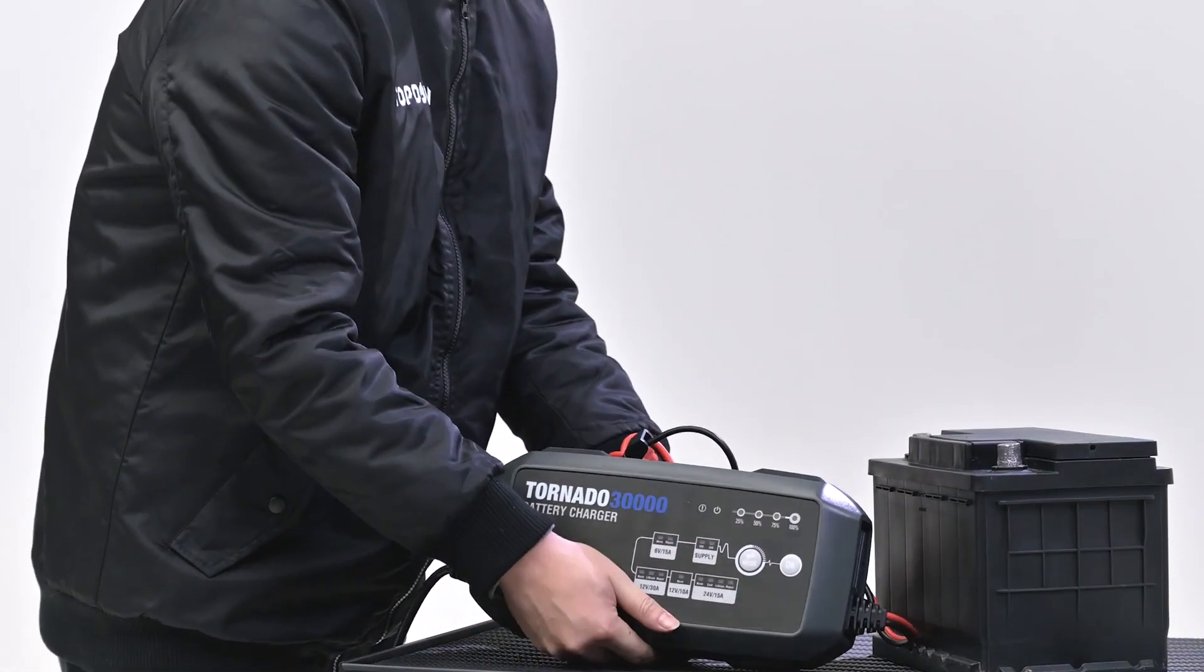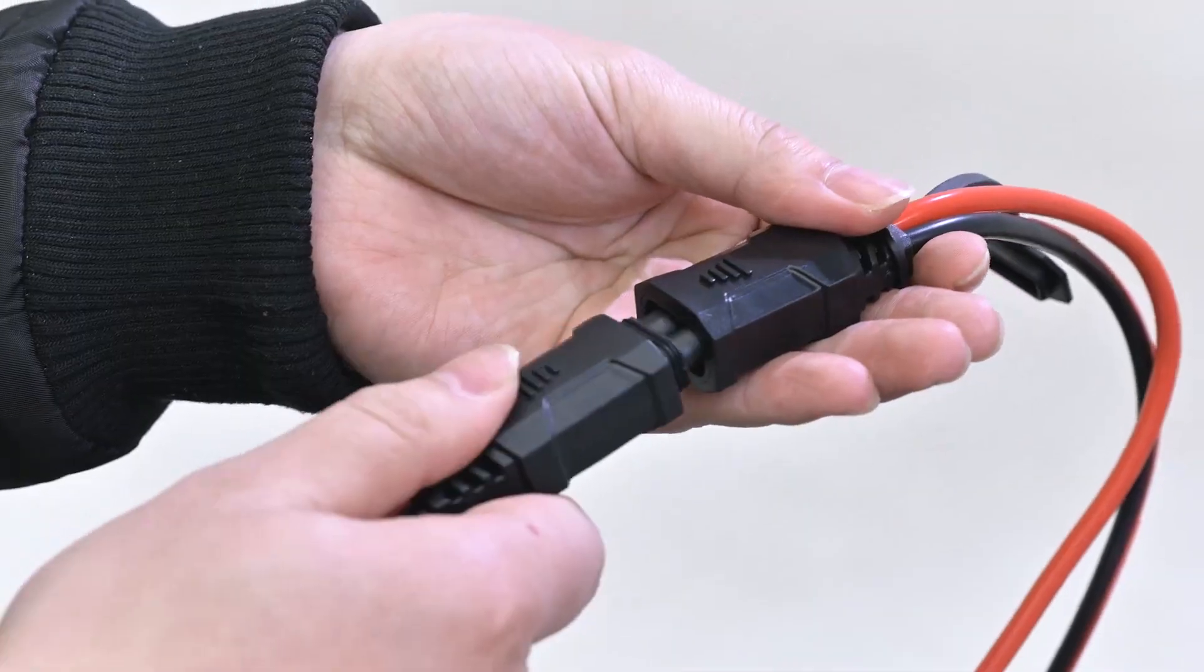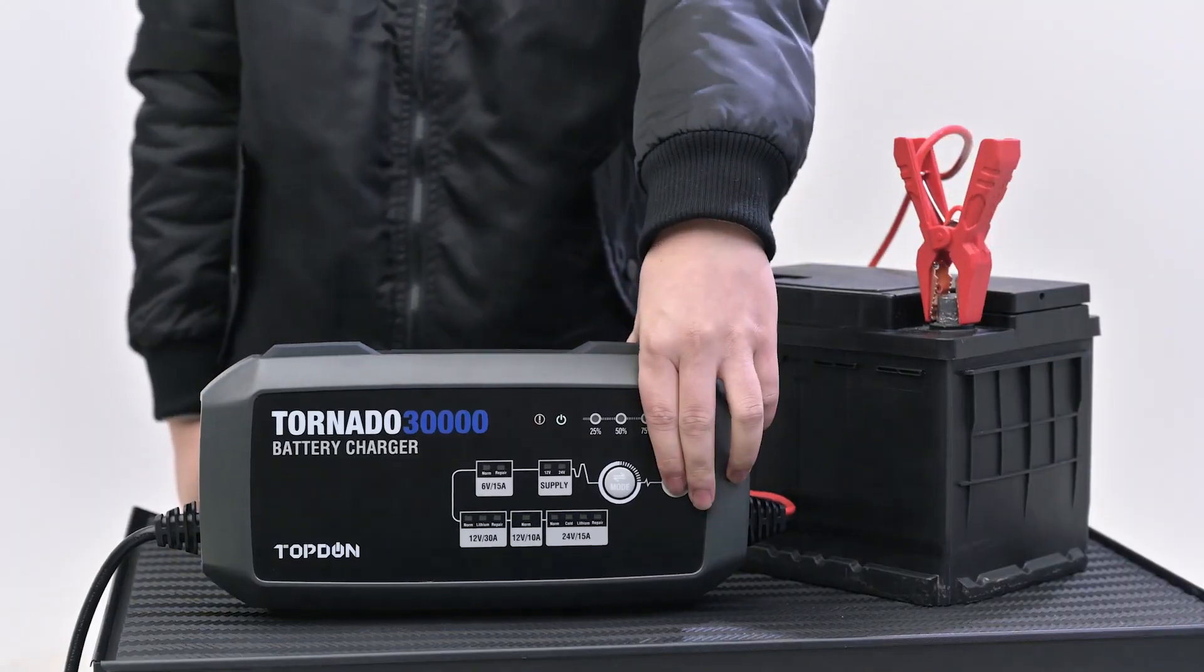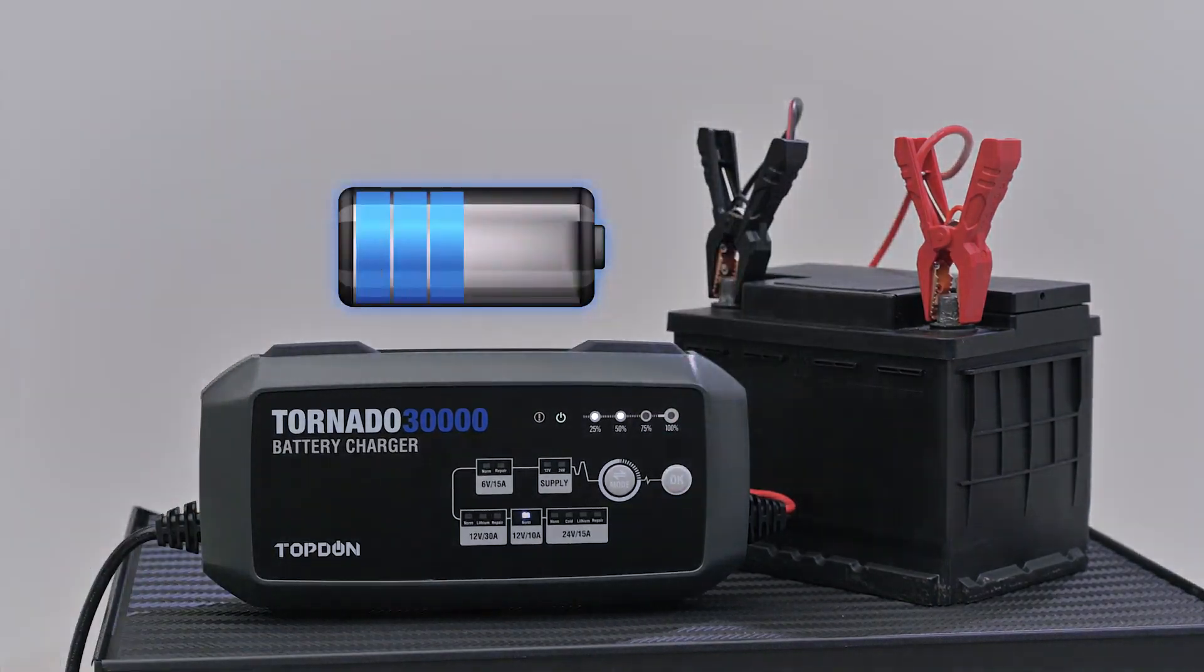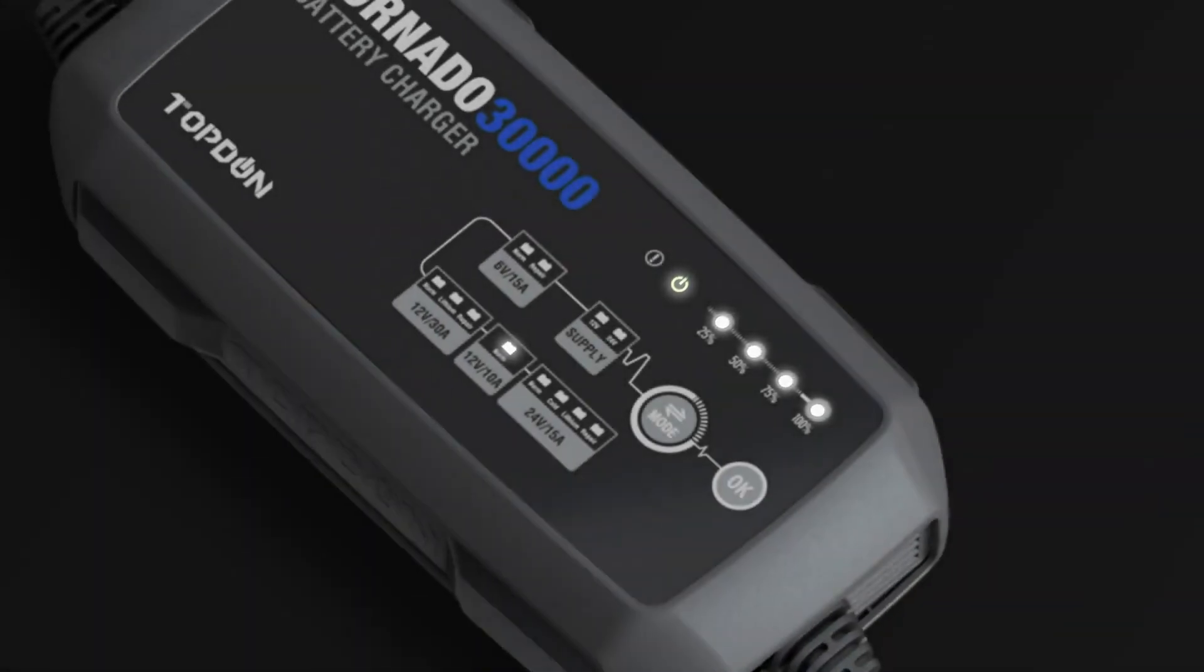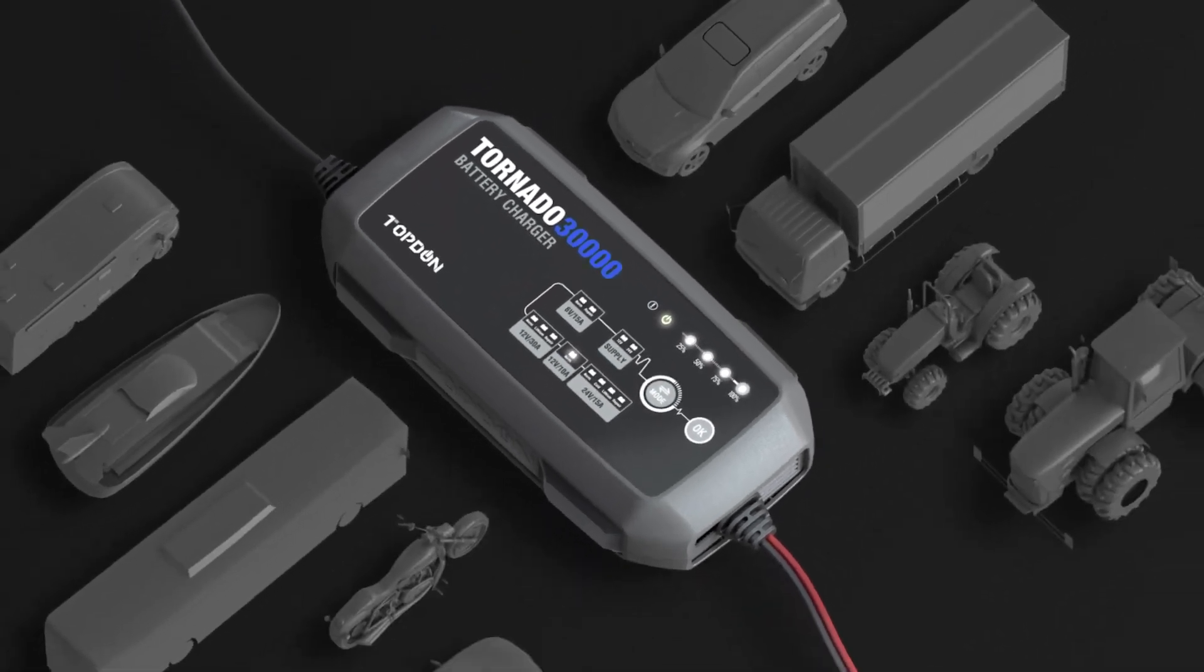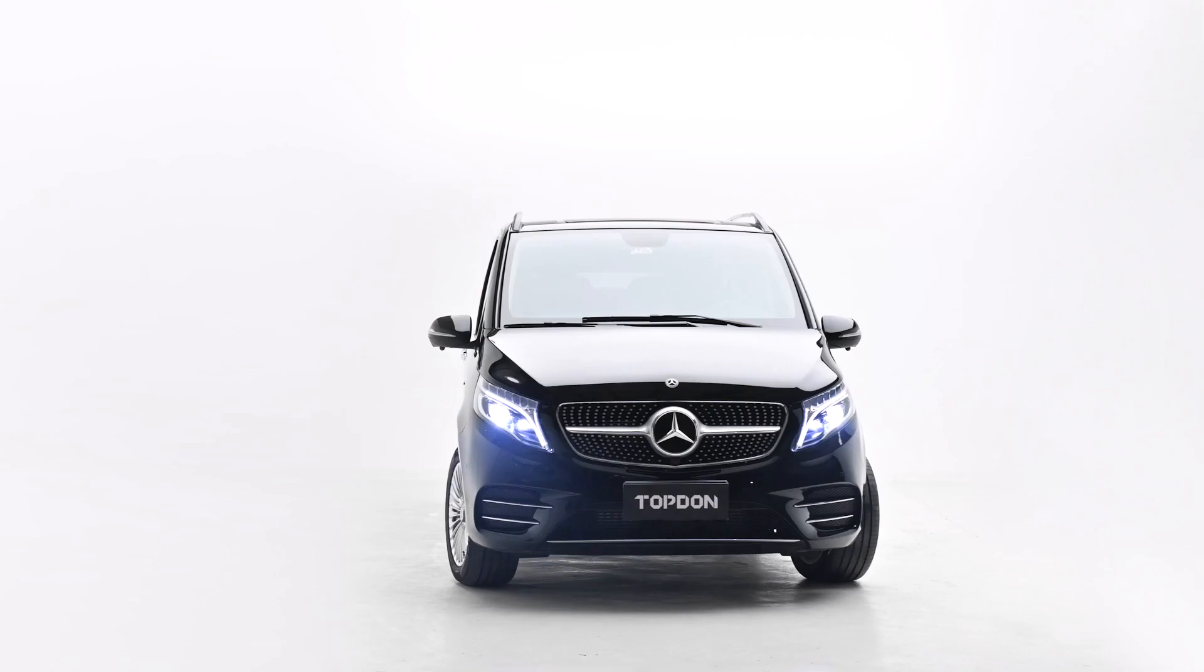Every session will start with an automatic voltage detection to assess the health of the battery and help determine what actions should be taken, helping you make the right call. Set up the Tornado at the end of the day, enjoy your night and let the 30,000 work for you. In the morning the battery will be ready for you.